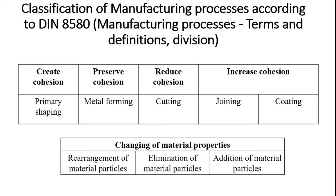After that, 'increase cohesion' covers joining processes such as welding, brazing, and soldering, among many others. Coating processes — including physical vapour deposition, chemical vapour deposition, and thermal spray coating — also come under increased cohesion. Finally, the manufacturing process of changing of material properties involves the addition of atoms with other materials to improve properties, rearrangement of material particles, elimination of material particles, and addition of material particles into available materials.